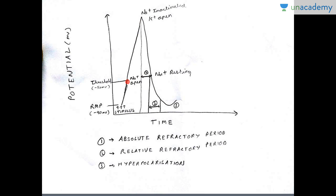Normally the membrane is not permeable to sodium, but when the channels open it becomes permeable and sodium moves inside, developing a positive charge on the inside of the membrane. The potassium channels are kind of lazy — from the point of stimulus they open late, whereas sodium channels open early. So sodium first moves in and reaches a peak, after which the sodium channel gets inactivated.